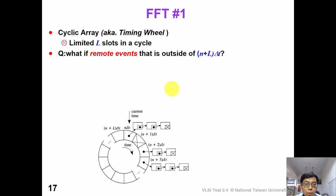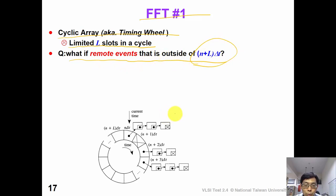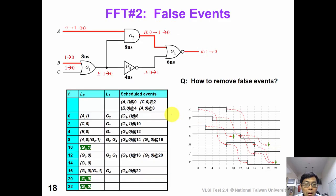Before we end this video, we have two FFTs for you. FFT number one: suppose we use the timing wheel data structure, which has only a limited number of slots in a cycle — what happens if we have a remote event which is outside of the wheel? What can we do? FFT number two: what can we do to modify the algorithm to remove false events? These two questions are very interesting. Please think about them. Thank you for watching.